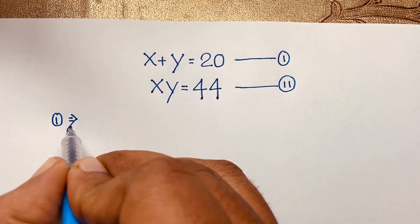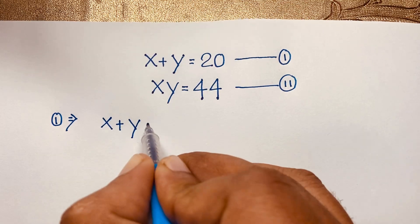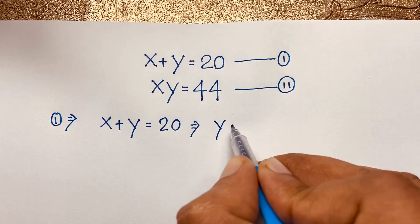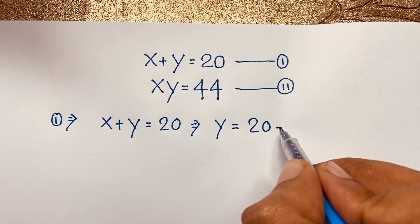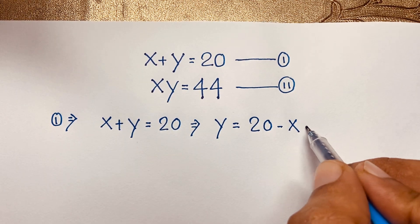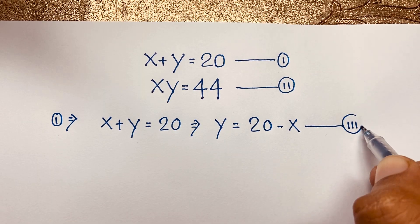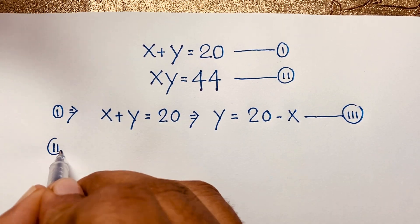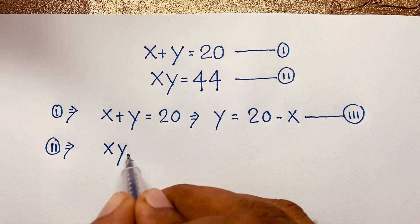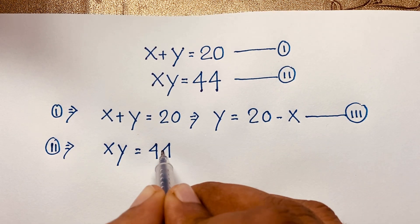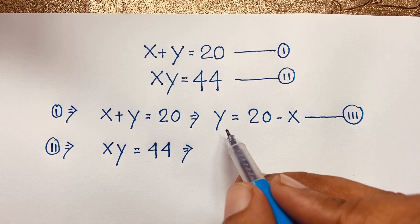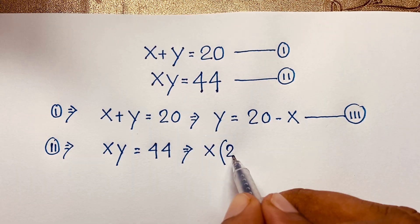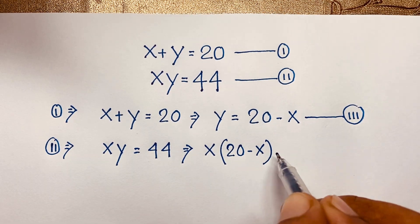According to the first equation, x plus y is equal to 20. We rearrange to get y is equal to 20 minus x — this is our third equation. Now we take our second equation, x times y is equal to 44, and substitute y equals 20 minus x, giving us x times (20 minus x) is equal to 44.